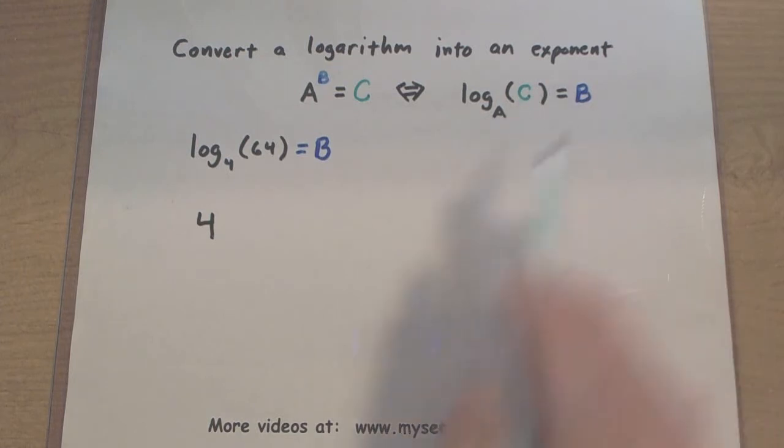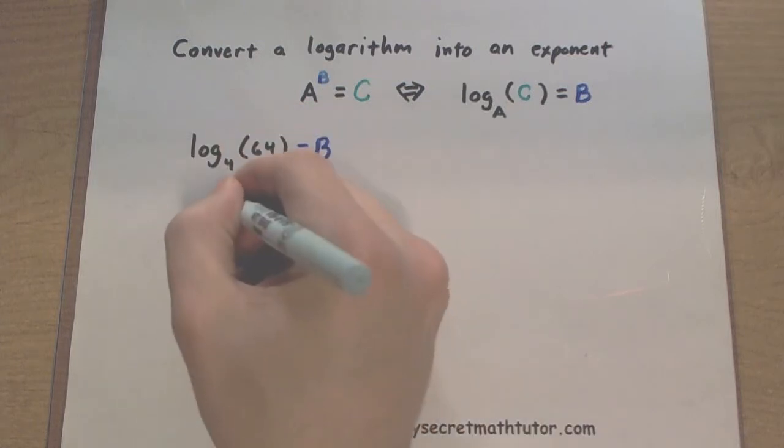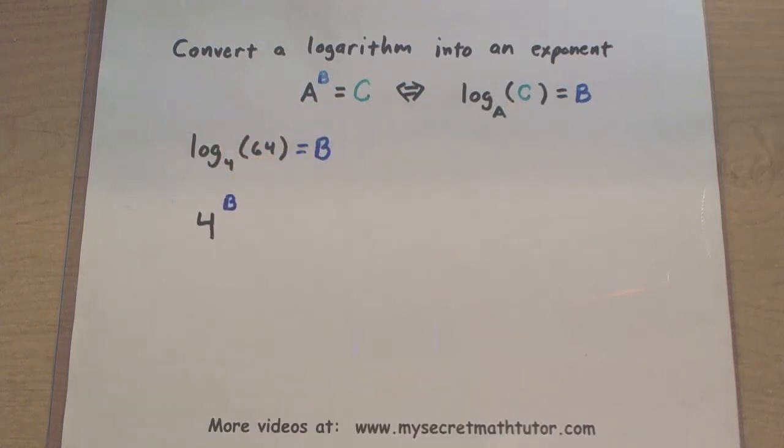Whatever this logarithm is equal to, that will end up in the exponent. So 4 to the power of B. Looking good.